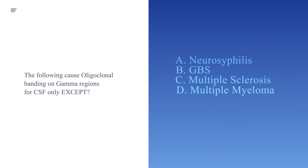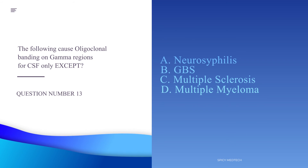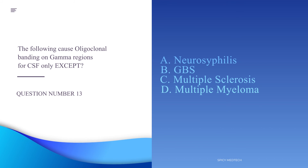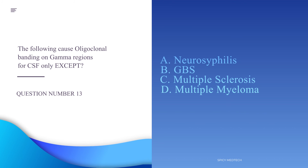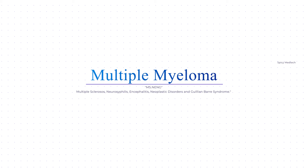Number thirteen: The following cause oligoclonal banding on gamma regions for CSF only, except: A. Neurosyphilis, B. Guillain-Barré syndrome, C. Multiple sclerosis, or D. Multiple myeloma. The answer is letter D, multiple myeloma. The acronym to remember for conditions with CSF-exclusive oligoclonal bands is MIS-Neng: Multiple sclerosis, neurosyphilis, encephalitis, neoplastic disorders, and Guillain-Barré syndrome.